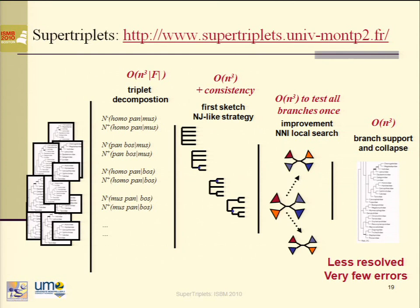Thank you for your presentation — particularly the approach and the various problems that you may have being large at a solution, and in your program did you have an example which would only be too long to resolve? Would your approach be able to resolve those things? The idea is that if you can have some long branch attraction, but using the supertree you can detect all the long branch attraction on the genes.